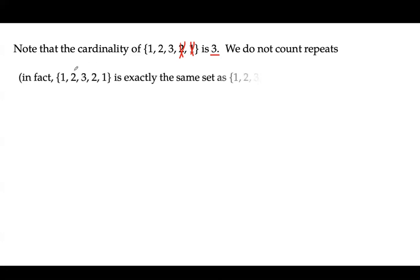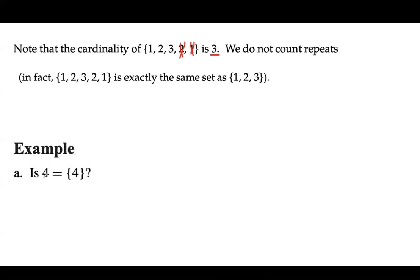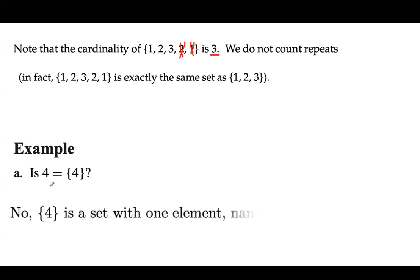We don't count repetitions. In fact, the set {1, 2, 3, 2, 1} is nothing but the set {1, 2, 3}. The example: is the number 4 the same as the set {4}? These two objects are not the same. The object on the right-hand side is a set, the object on the left-hand side is a number — these two objects are not mathematically equal to each other.